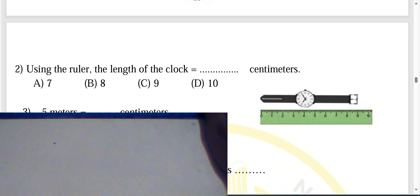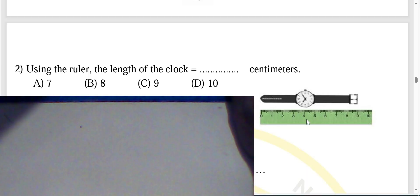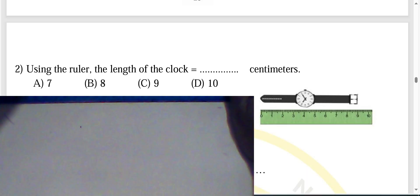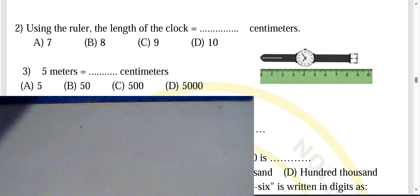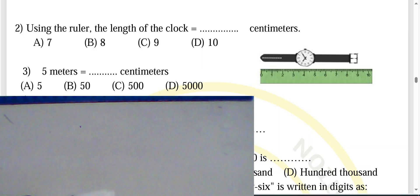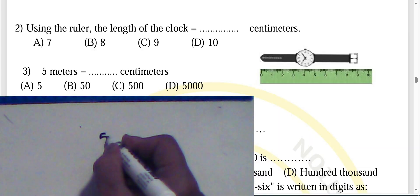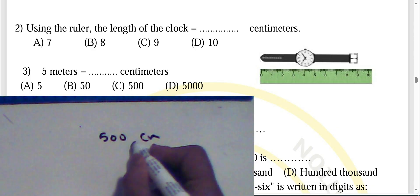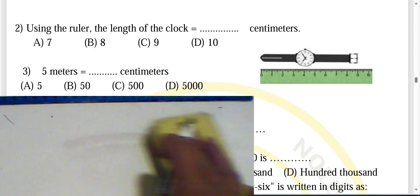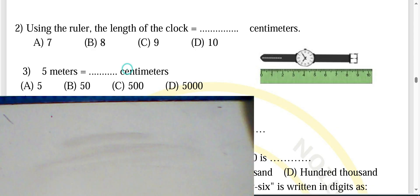Question two: using the ruler, find the length of the clock. It starts from zero to nine — the answer is nine centimeters, choose letter C. Question three: five meters equals how many centimeters? To convert from meters to centimeters, multiply by 100, so the answer is 500 centimeters — choose letter C.